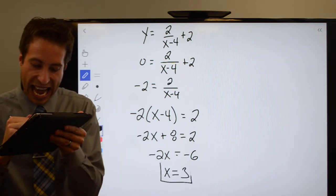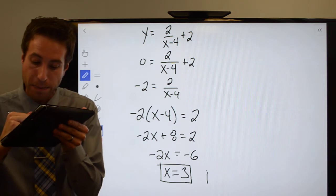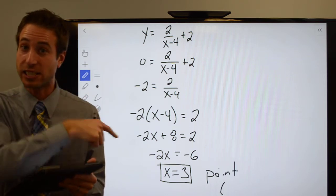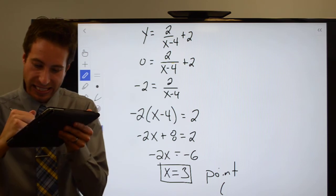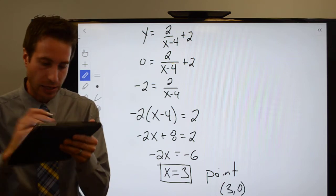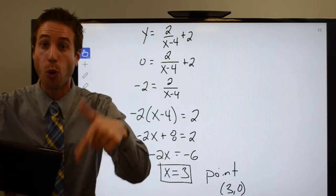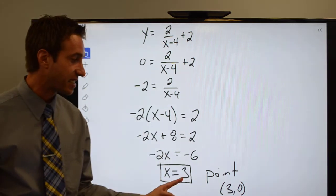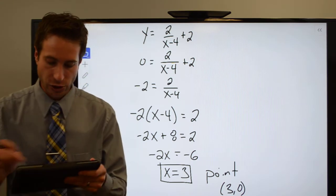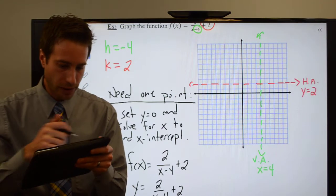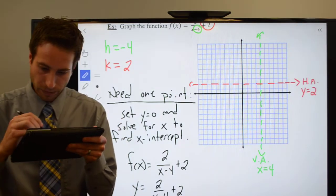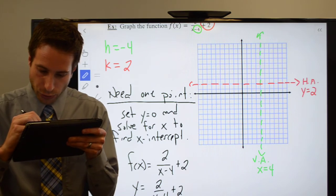This is an X intercept. So I have the point where X is 3 when Y is 0, so the point is 3, 0. Let's go plot that point. We set Y equal to 0, we know we're finding an X intercept. X equals 3 when Y is 0. So that's my point: 3, 0. Let's throw it on here: 1, 2, 3, 0. It's that guy right there. I'll graph it in blue.